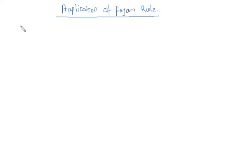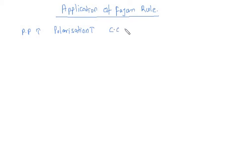If the polarization power of the cation increases, then the polarization increases. If you want to know about polarization power, watch my previous video. As the polarization power increases, the phenomenon of polarization increases, and as polarization increases, covalent character also increases. If covalent character increases, the melting point will decrease and solubility will also decrease.